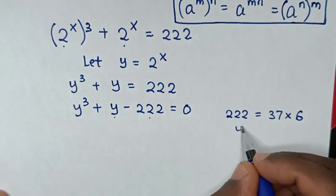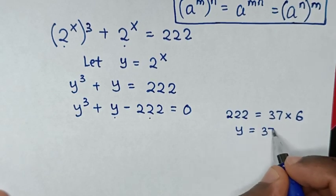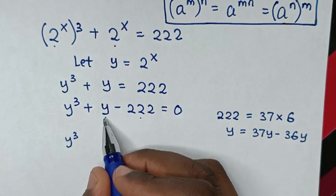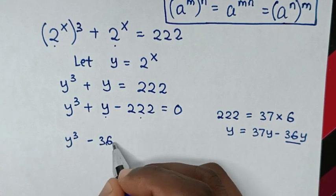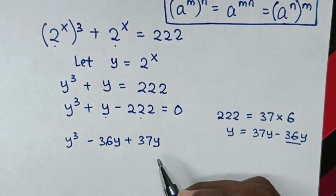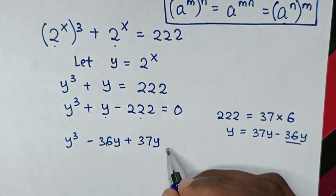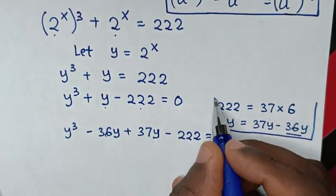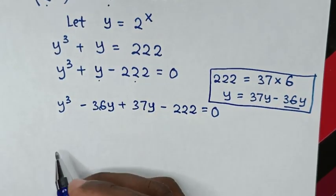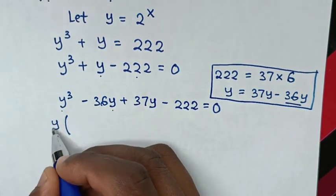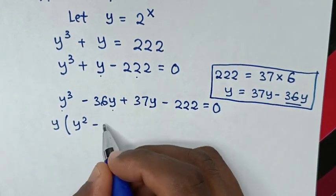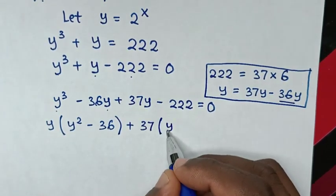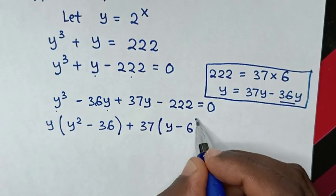We split y as 37y minus 36y. So the equation becomes y cubed minus 36y plus 37y minus 222 equals 0. Then y is factored out from the first two terms giving y(y² − 36), and 37 is factored from the last two terms giving 37(y − 6), all equal to 0.